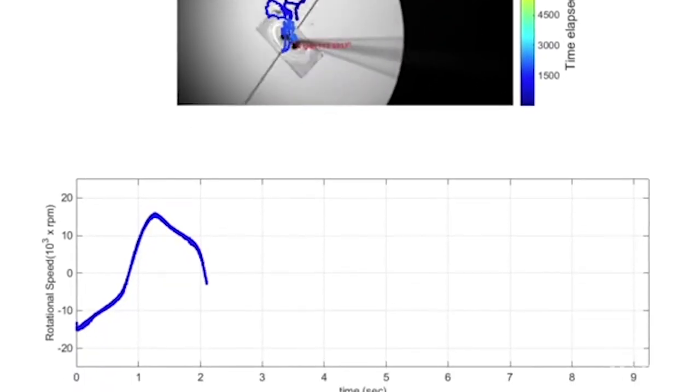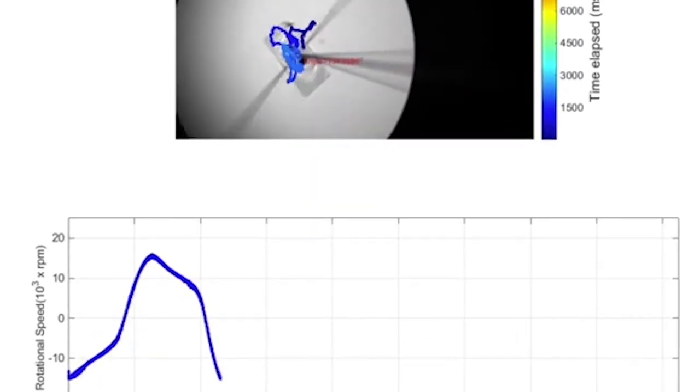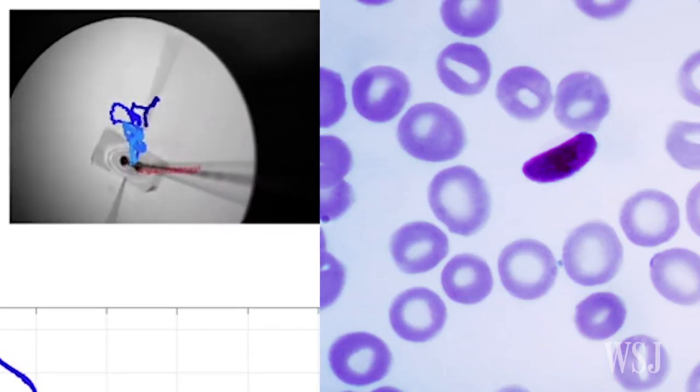Fast enough to separate plasma from red blood cells within 90 seconds and isolate malaria parasites in 15 minutes.